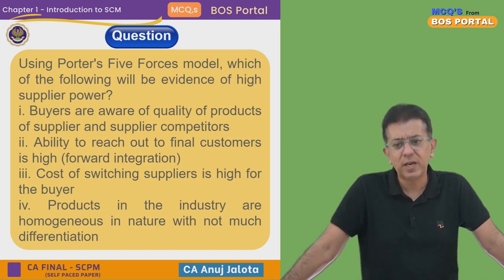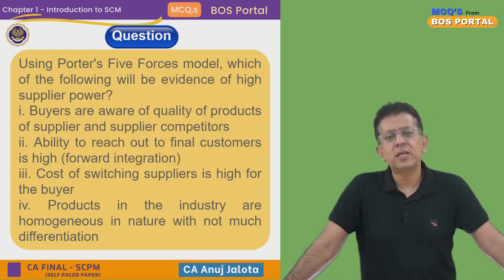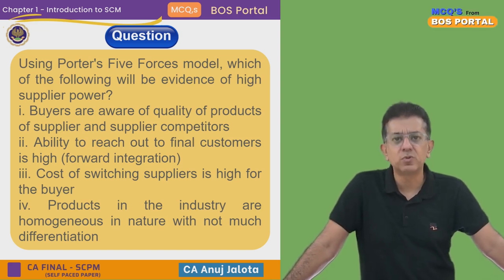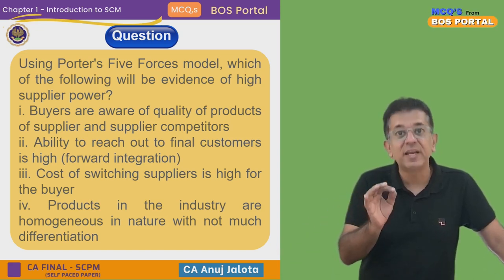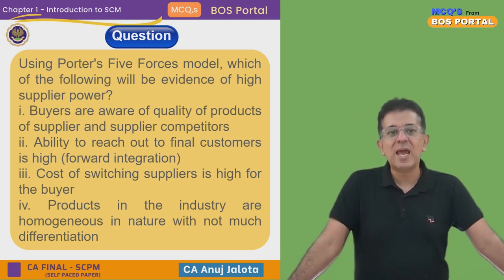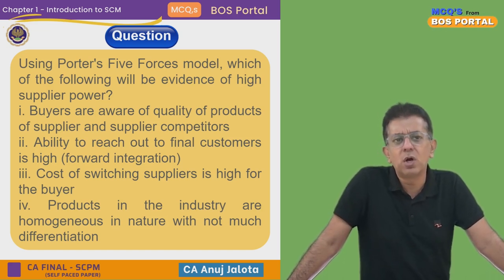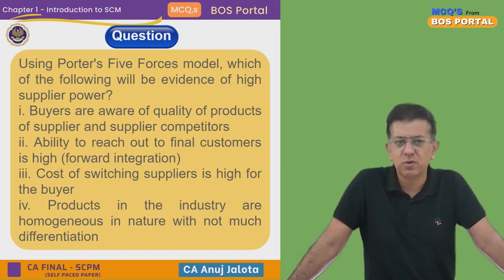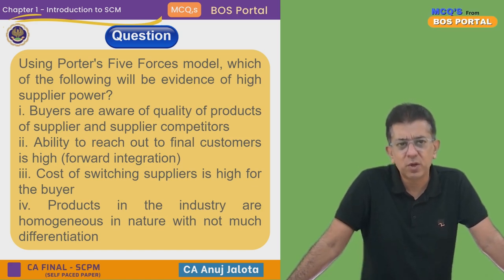Option three: cost of switching suppliers is high for the buyer. For example, you purchased a SIM card from Bharti — if the Indian government makes a rule that to port out to Jio you will have to pay 10,000 rupees, switching will become very difficult. Bharti and Jio would take great advantage of that. Option four: products in the industry are homogeneous with not much differentiation — in that case it hardly matters, and the supplier will have low force.